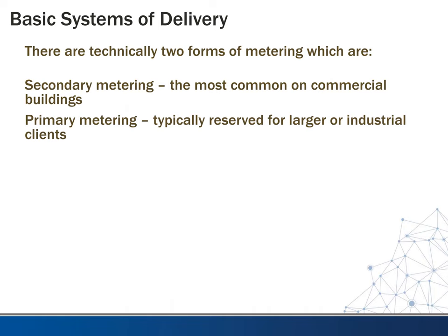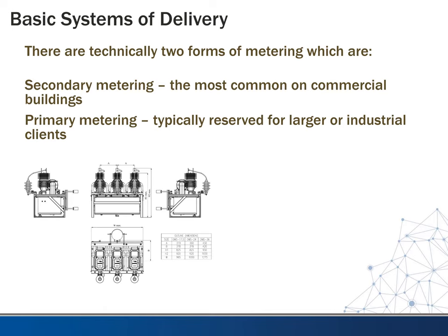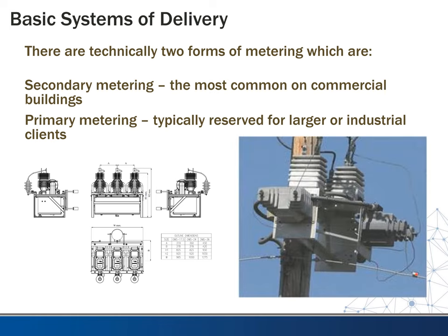The second type mentioned was primary metering, typically reserved for larger or industrial clients. Here's a technical drawing of a primary meter and what they look like on the pole — they're usually pole-mounted where the primary or medium voltage lines are. If you see something with ribbed connection points like this, it's usually a primary meter used for metering on the primary side.